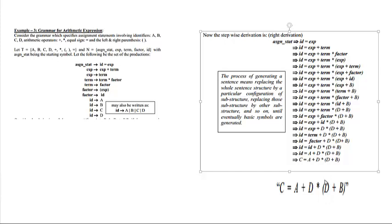We have a plus sign and multiplication sign, and now we want parentheses. We look into the grammar: factor is equal to expression in parentheses, so we write factor as (expression). We want a plus sign inside the parentheses, so we look into the grammar: expression is equal to expression plus term, and we write expression plus term inside the parentheses.